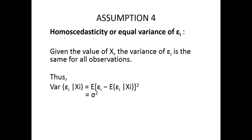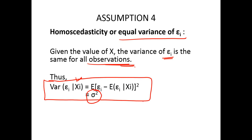Assumption number 4: homoscedasticity or equal variance of the error term. So given the value of x, the variance of ei, which is the error term, is the same for all observations. Mathematically, we can say that the variance of the error term given the value of x is constant. It doesn't depend on anything.